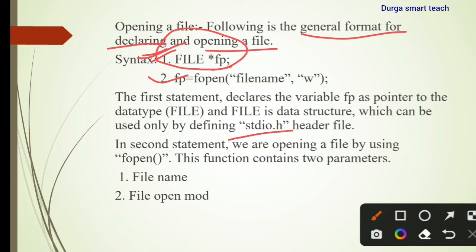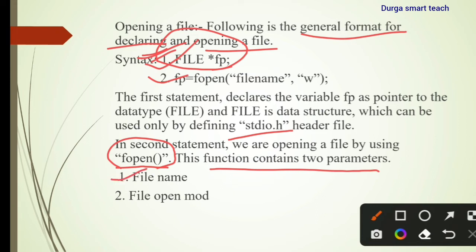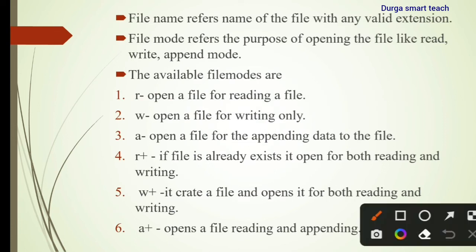stdio.h means standard input/output header file. It contains declarations and definitions about input and output operations. If you are writing data into a file that means input, and if you are reading data from a file that means output. That's why you need to include this FILE *fp data structure. The fopen() function is used to open a file in secondary memory and contains two parameters: file name and file open mode.